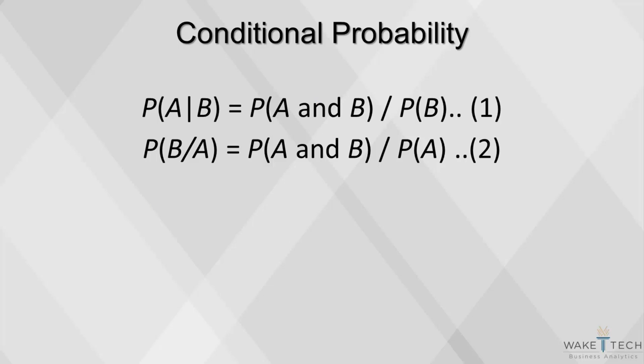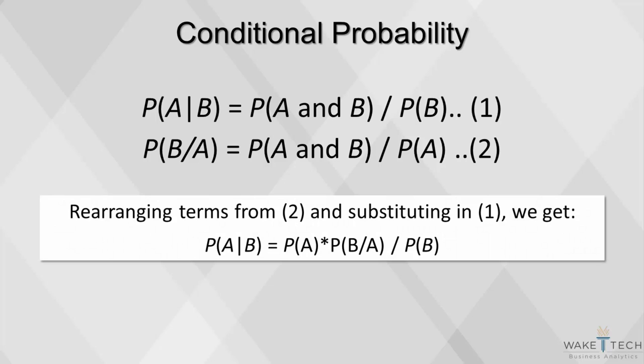Sometimes the probability of one event will affect another. These are called dependent events, and their probabilities are called conditional. This is the formula for conditional probability: the conditional probability of A, given that B has already occurred, is equal to the joint probability of both events occurring together, divided by the probability of B occurring, without regard to whether A has occurred or not.